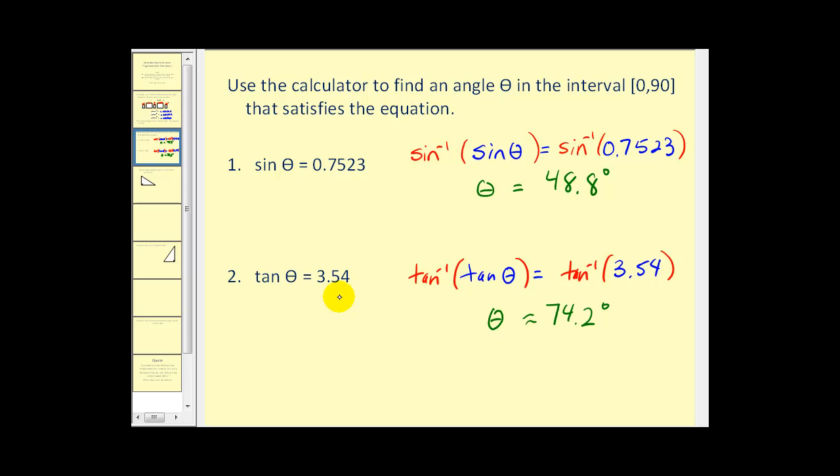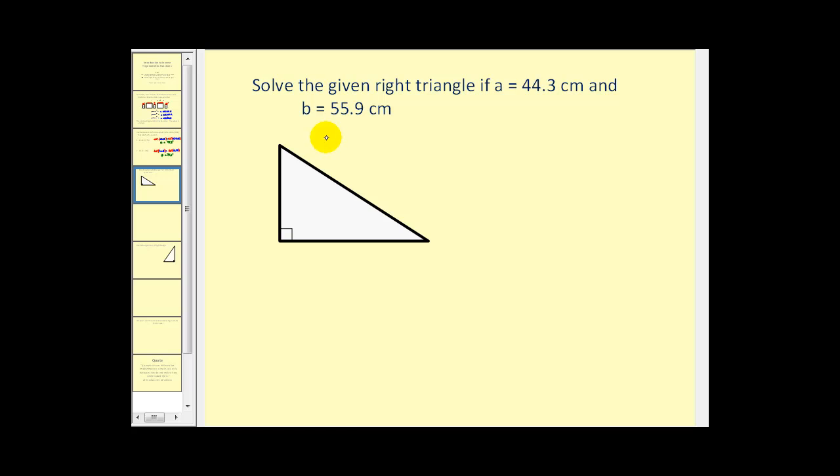There's a lot more to say about inverse trigonometric functions. However, for right now, we're just going to use them to find angles given a trig function value. And also to solve right triangles. So here's another example. We want to solve the given right triangle if A equals 44.3 centimeters and B equals 55.9 centimeters.